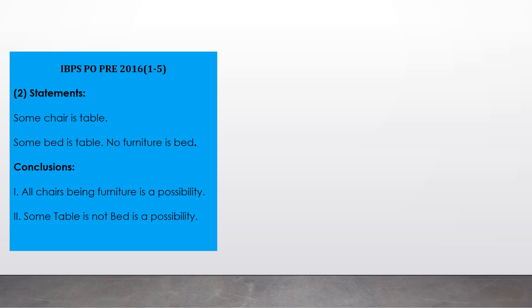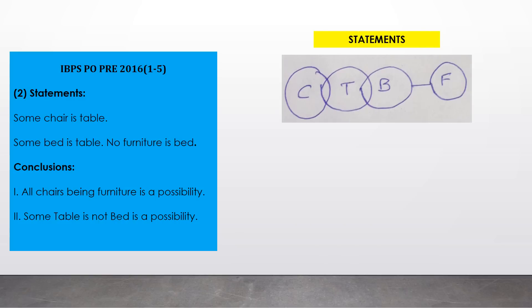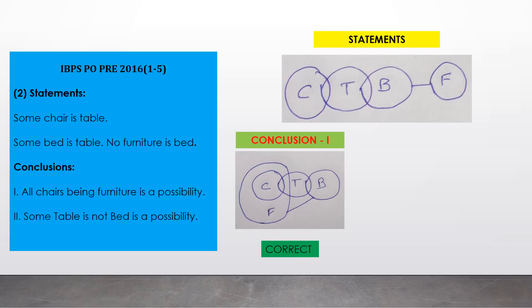Question 2 — Statements: some chairs are tables (small overlap between C and T), some beds are tables, and no furniture is bed. The circles for B and F should be separate, connected by a dash mark indicating no correlation. Conclusion one — 'all chairs being furniture is a possibility': draw circle inside furniture, verify all statements — 'some chair is table' yes, 'some bed is table' yes, 'no furniture is bed' yes — so this possibility is correct. Conclusion two — 'some table is not bed is a possibility': our first diagram already shows some portion of T not in B, so this possibility is also correct.